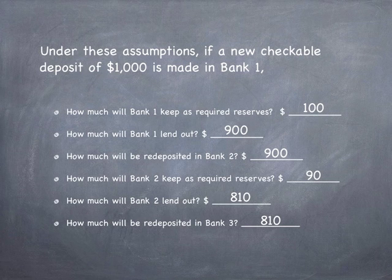Under these assumptions, if a new checkable deposit of $1,000 is made in Bank 1, how much will Bank 1 keep as required reserves? $100. How much will Bank 1 lend out? $900. How much will be redeposited in Bank 2? $900.